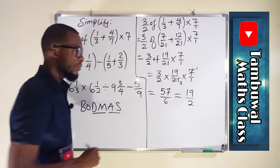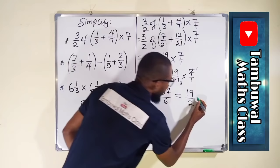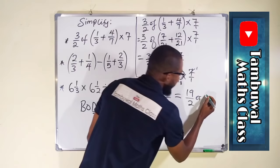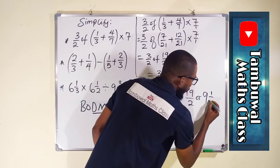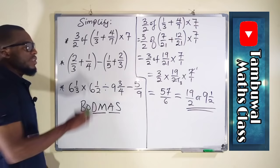Our answer is 19 over 2 because 19 and 2 do not have any common factor. We can still express this as a mixed number: 2 goes into 19 nine times with a remainder of 1, giving us 9 and 1 over 2. So the final answer is either 19 over 2 as an improper fraction, or 9 and 1 half as a mixed number. Let us move on to the next problem.